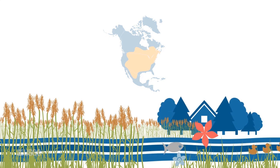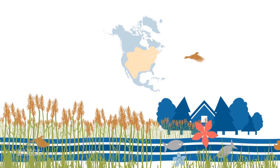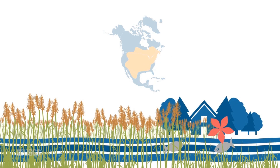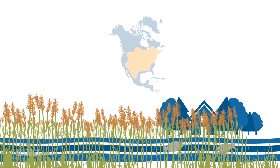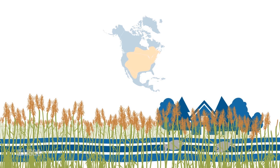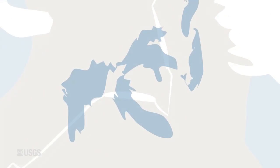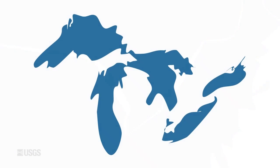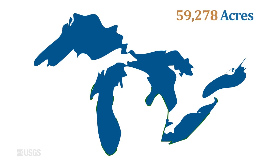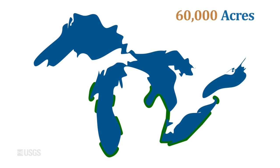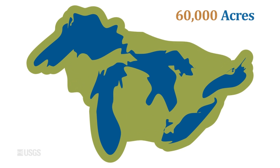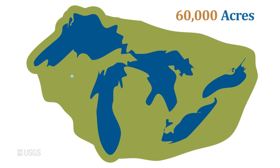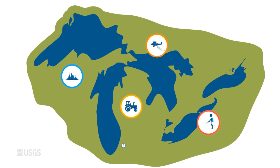It has degraded fish and wildlife habitat, lowered property values, and limited recreational access to beaches and shorelines. In the Great Lakes region, it has already invaded an estimated 60,000 acres of shoreline, as well as an unknown amount of inland areas.